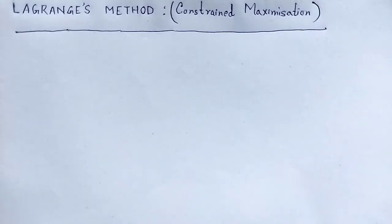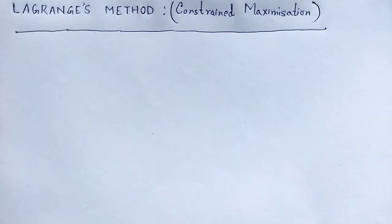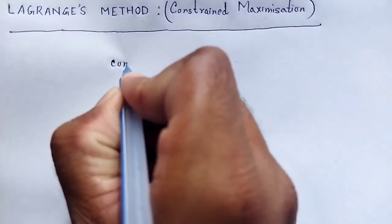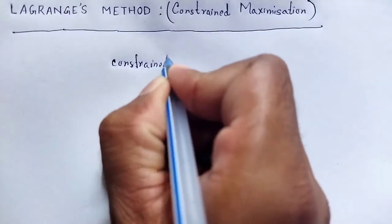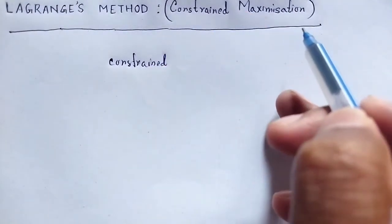In many problems, it is necessary to find the maximum or minimum of a function of several variables, in which the variables are connected by some given relation or condition. That relation is known as our constraint, and the method is known as constraint maximization.